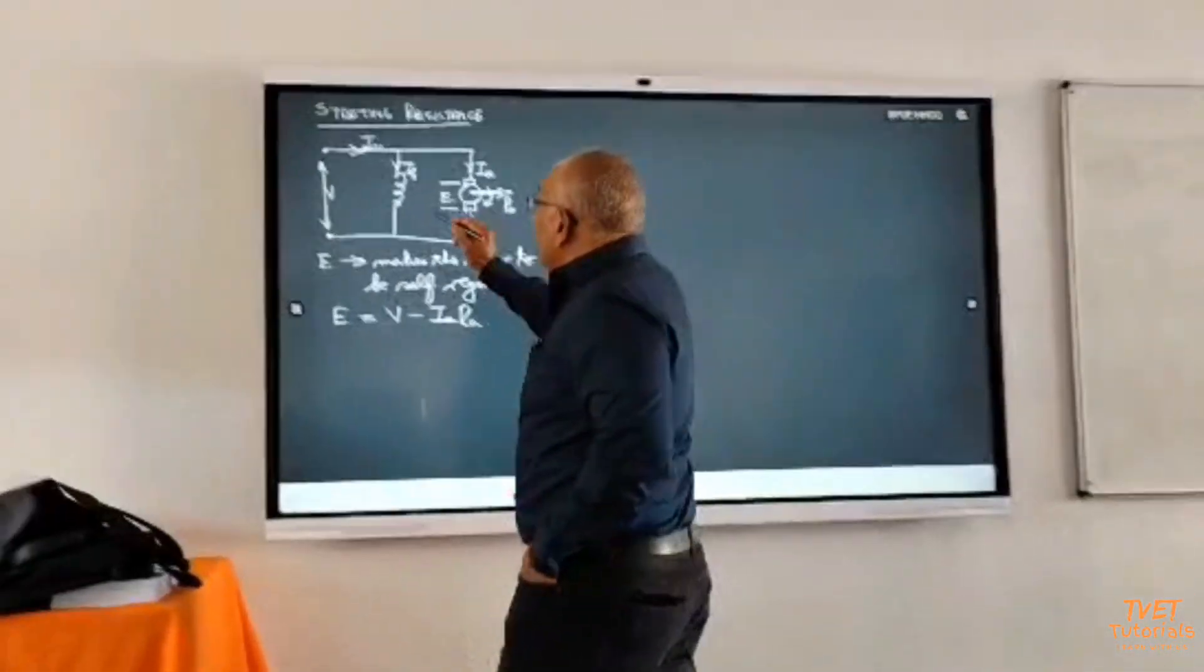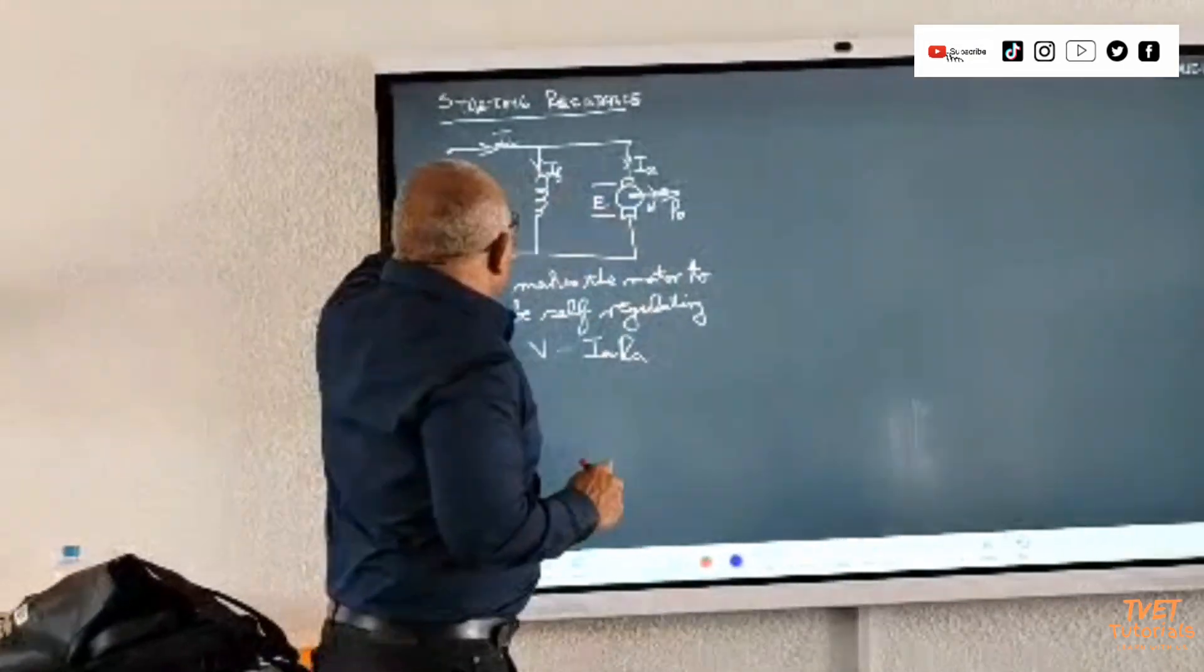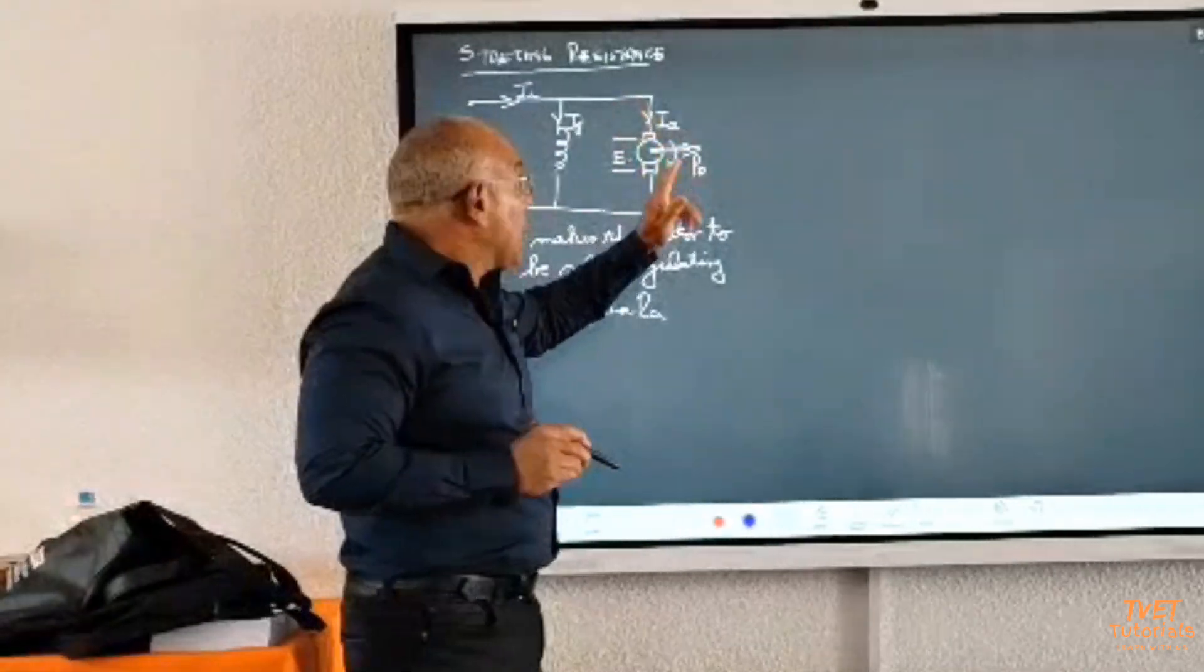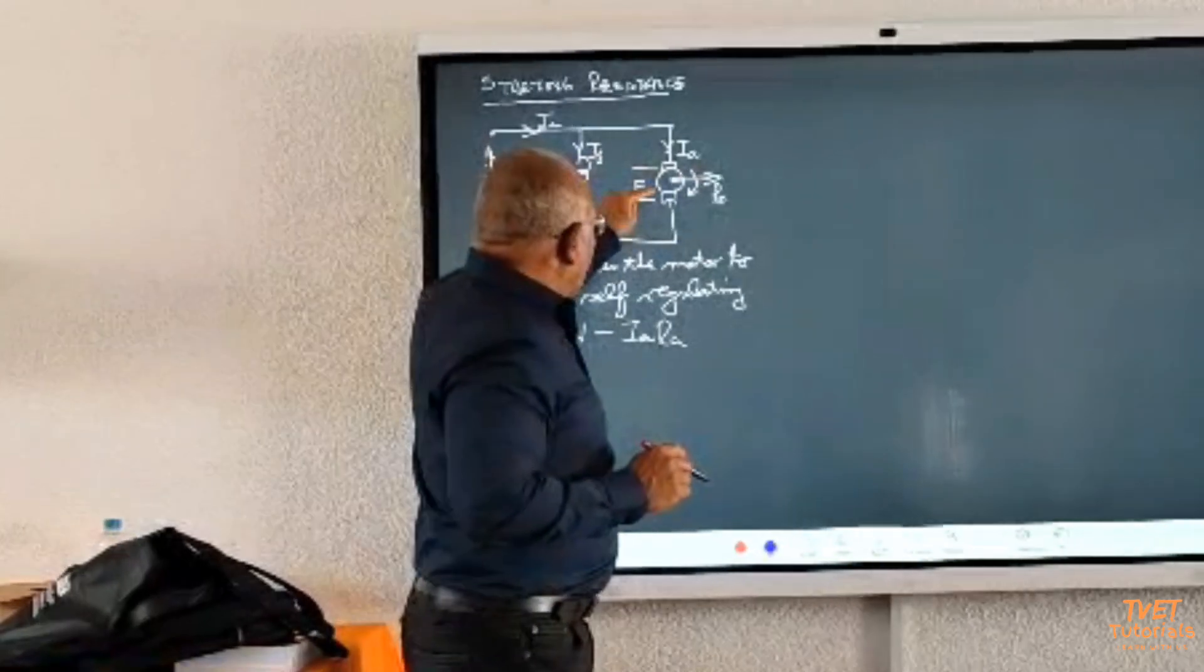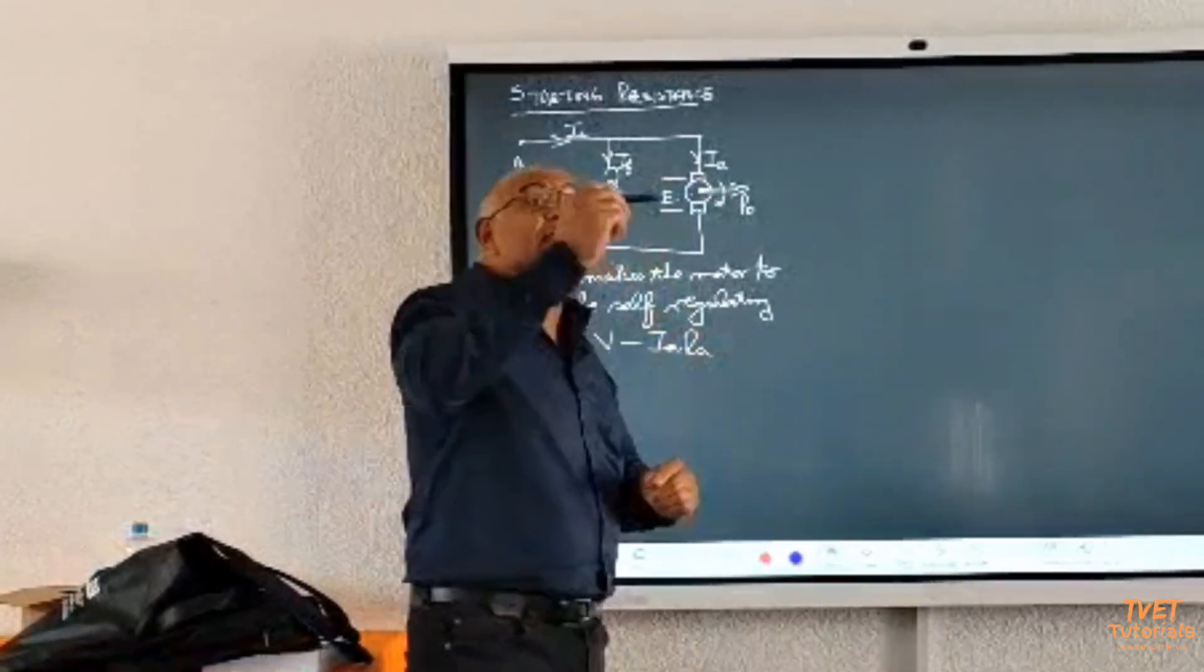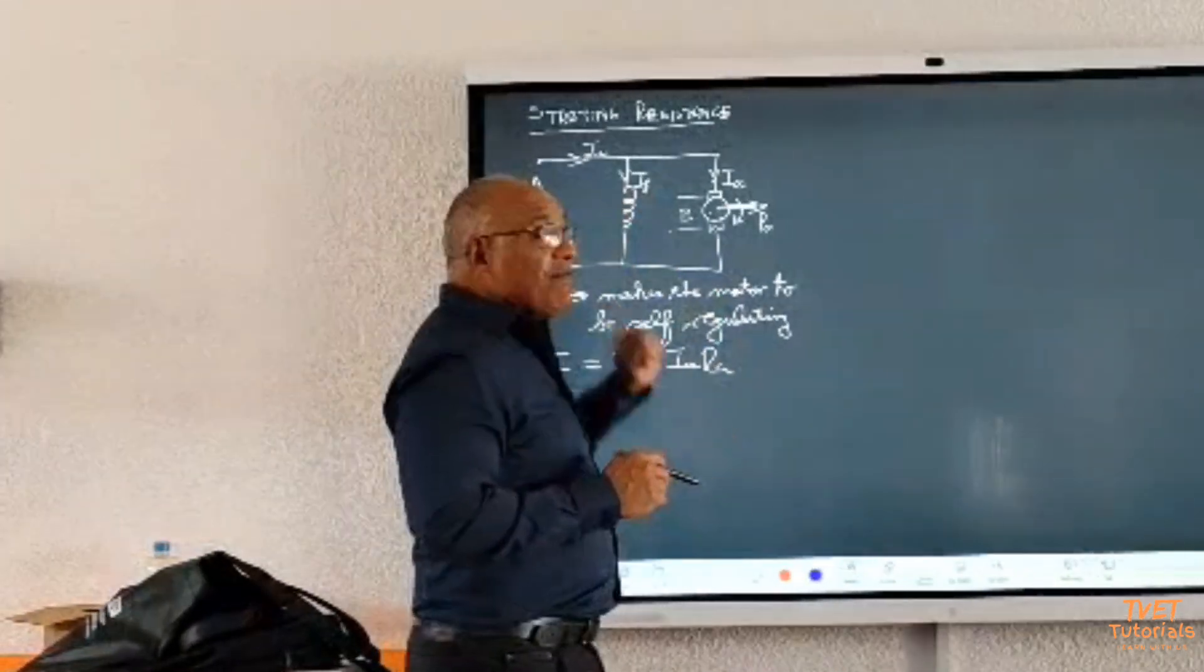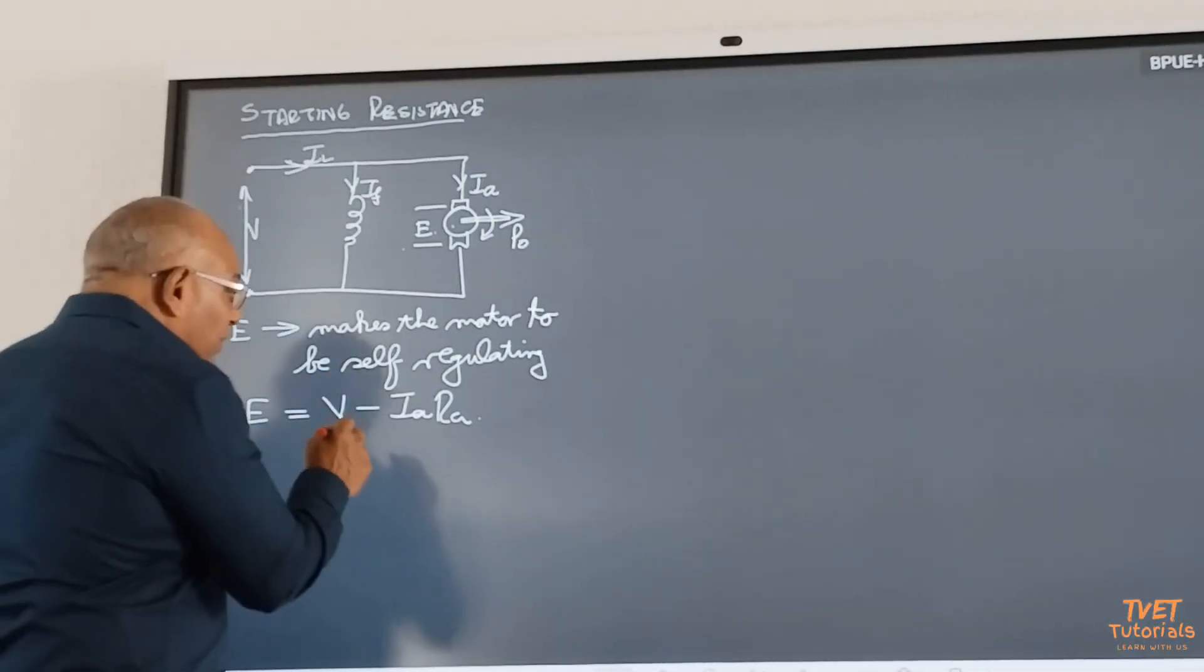Remember that this DC motor can operate by simply applying a voltage. But we notice that according to Faraday's law, because the conductors of the armature are rotating inside the magnetic field, we cannot avoid this EMF being induced. Therefore, from this formula here, I am going to make I armature the subject of the formula.